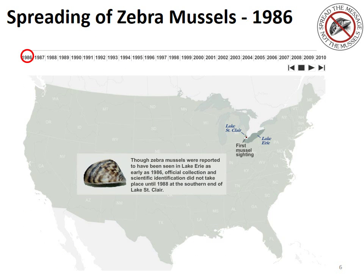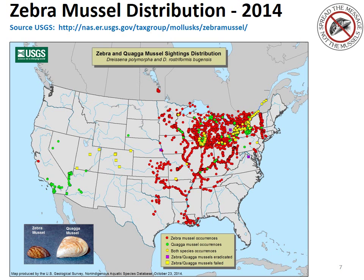Zebra mussels were first identified in 1986 in Lake Erie. Unfortunately, zebra mussels have distributed greatly throughout the United States. Here is an updated map reflecting, as of 2014, the prolific spread of zebra and quagga mussels throughout the United States.